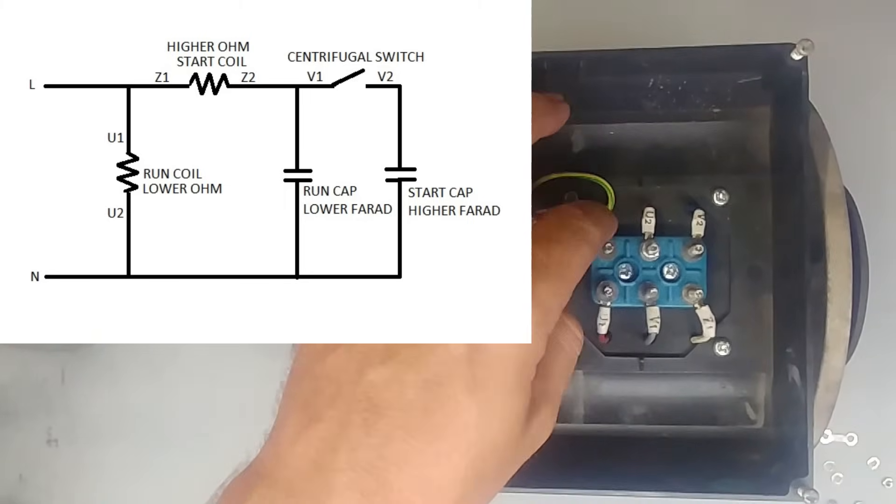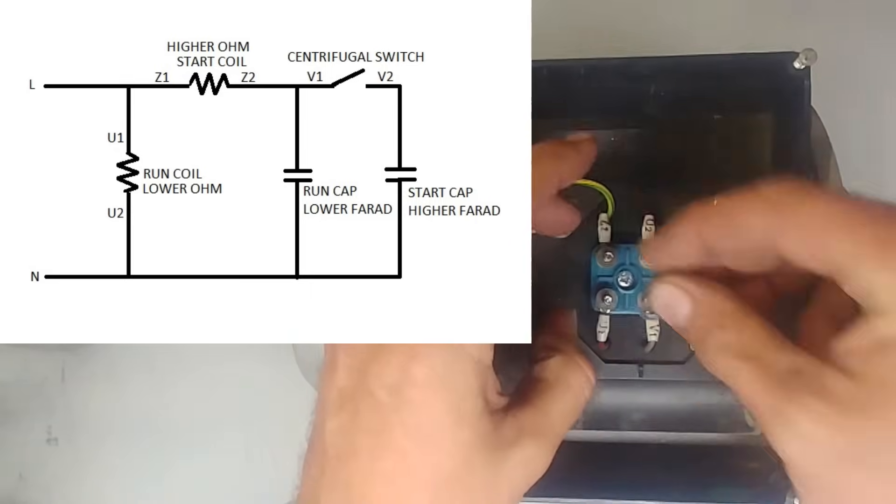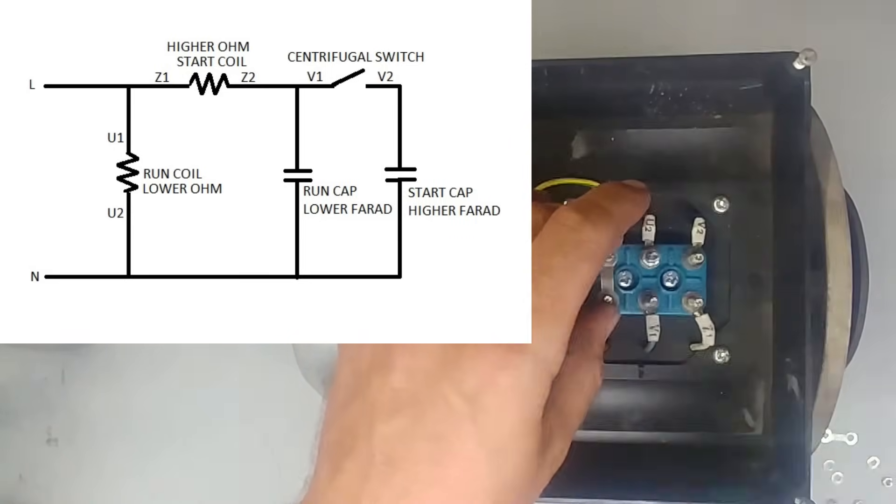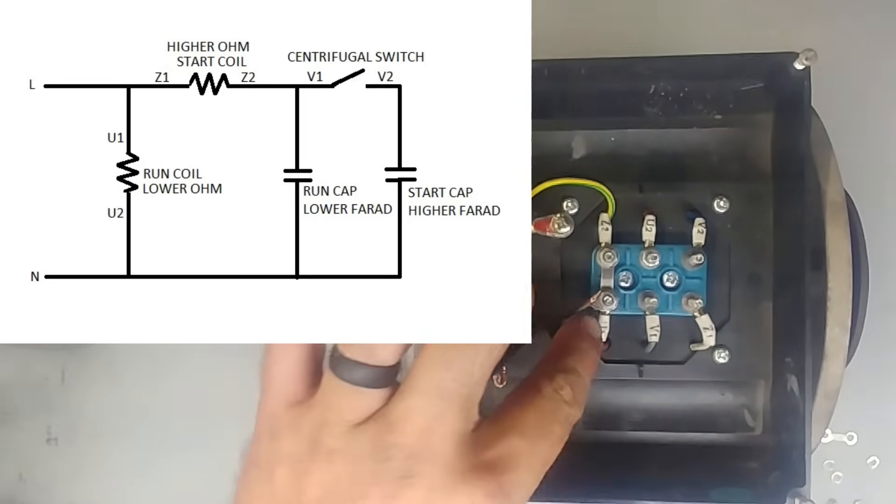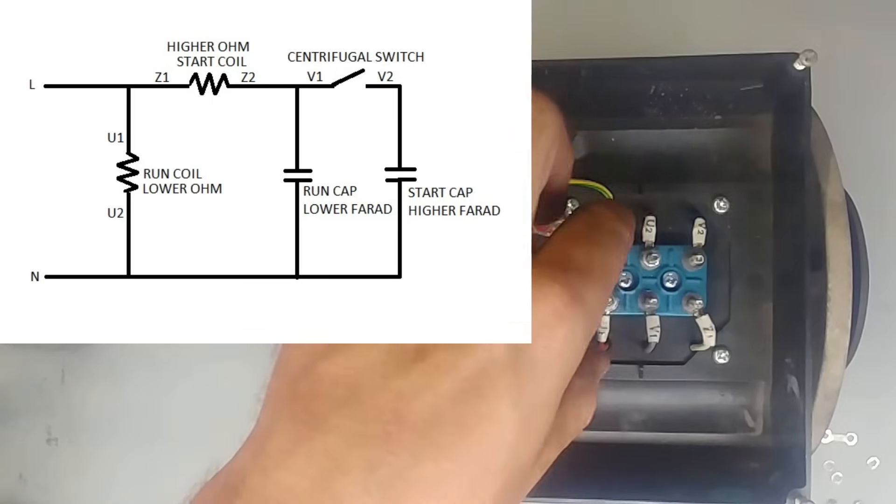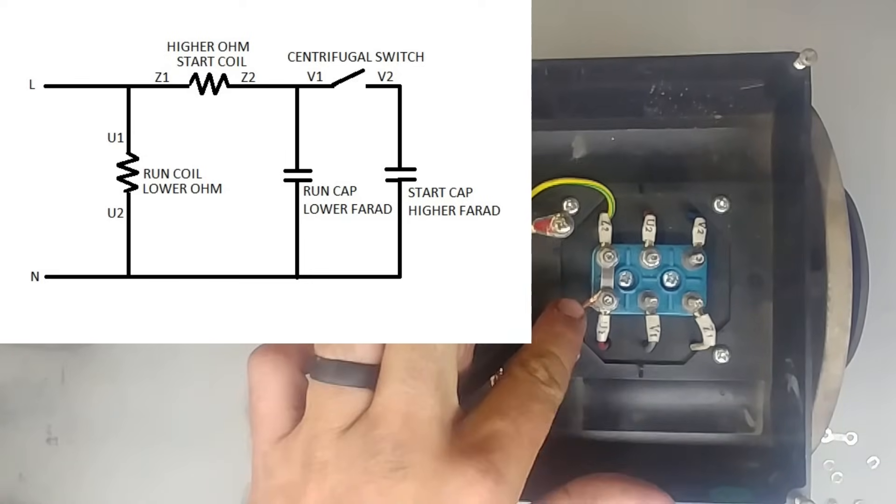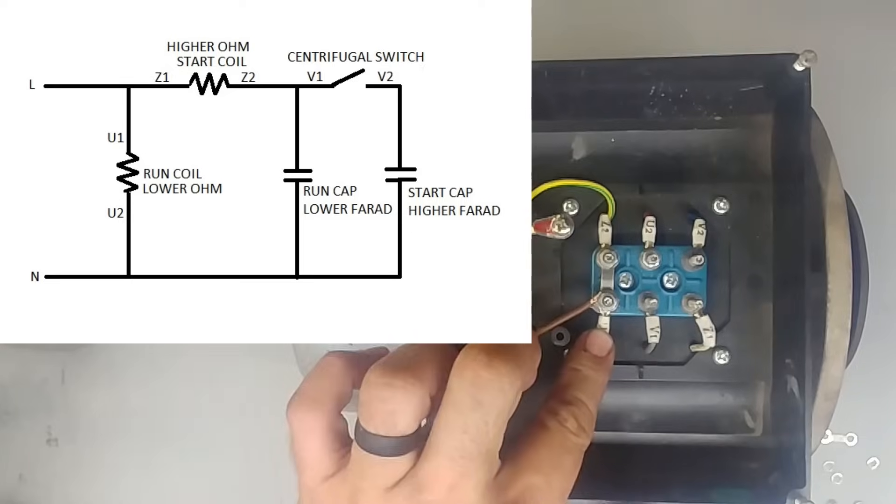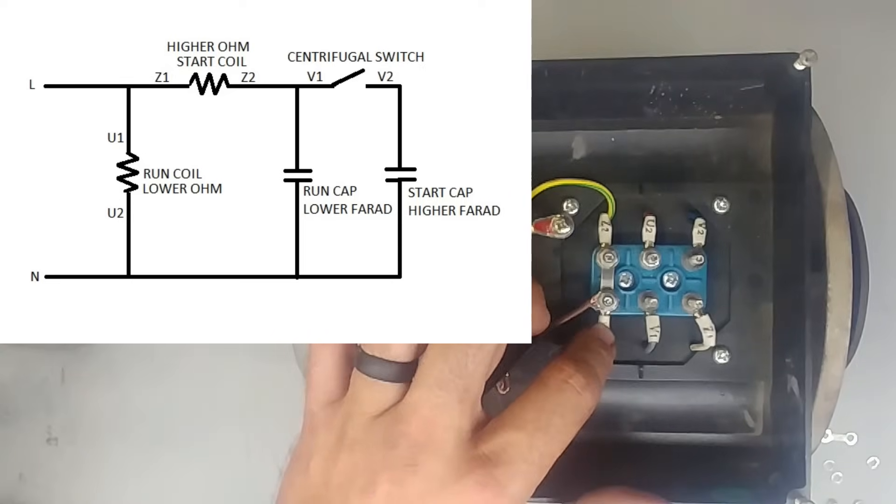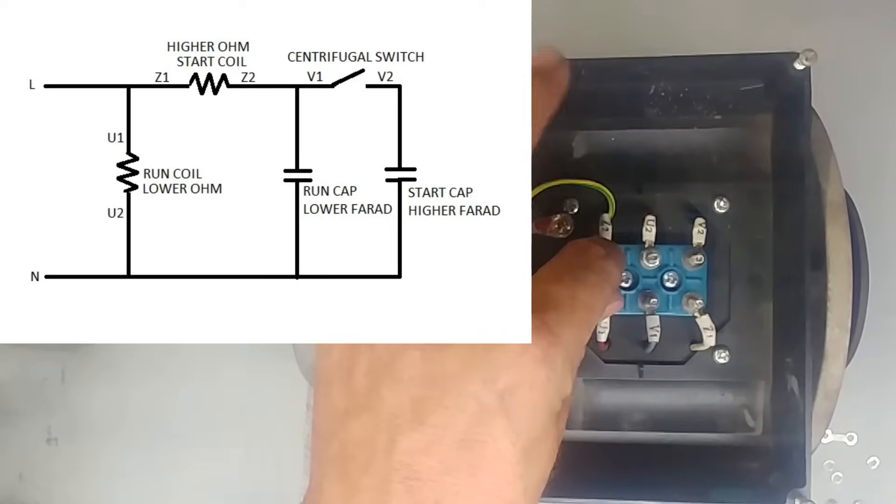I can actually connect these two with a little bridge. This is Z2 and U1. It doesn't matter. This could have been Z1. This could have been U2. It doesn't matter. Okay, so I've connected my one U point and the Z point together with a bridge as well as my live wire. If I was doing this permanently, I would have put a lug on here, but this is just for show. So the live is connected with my starting coil and my running coil, one point each.